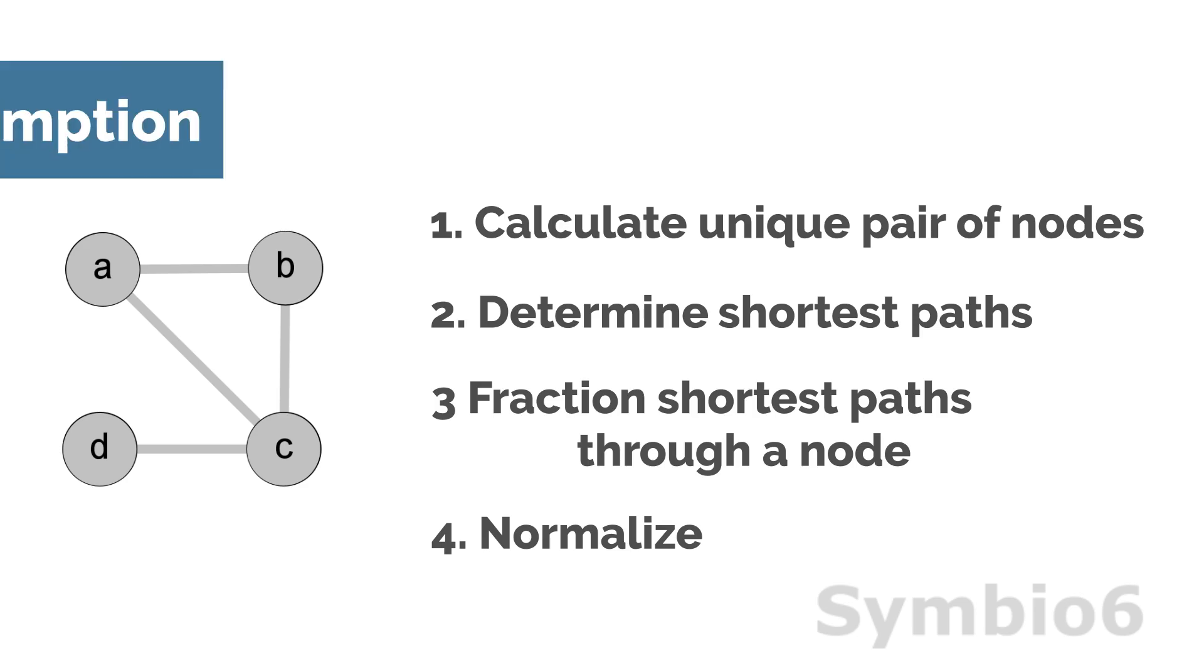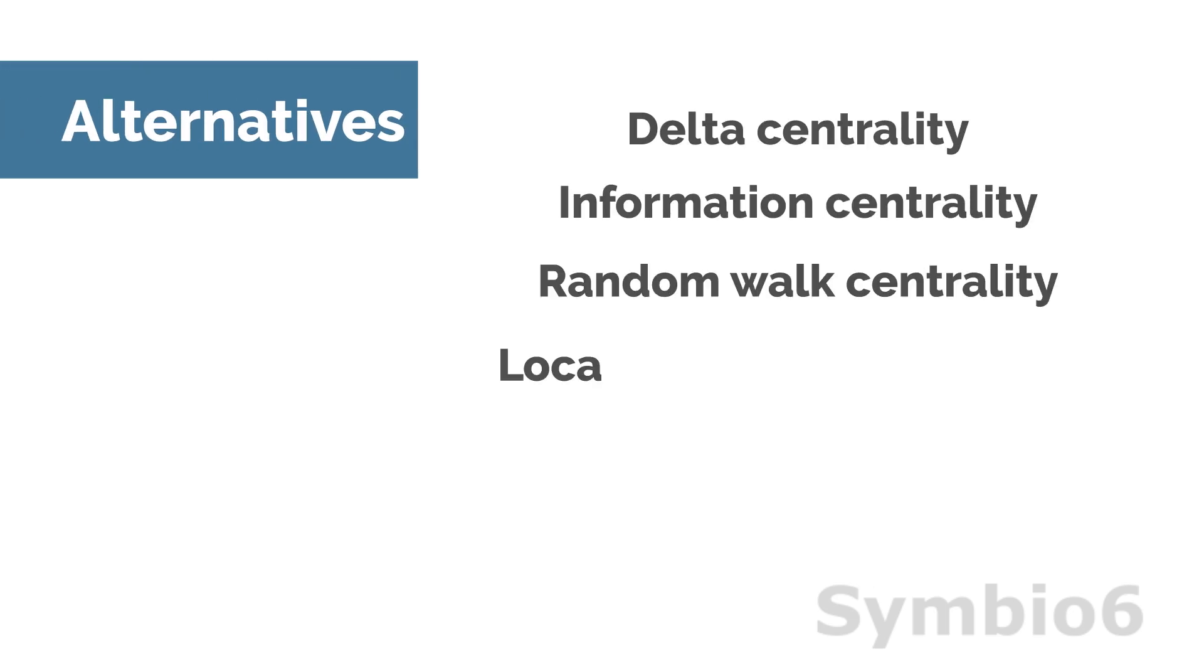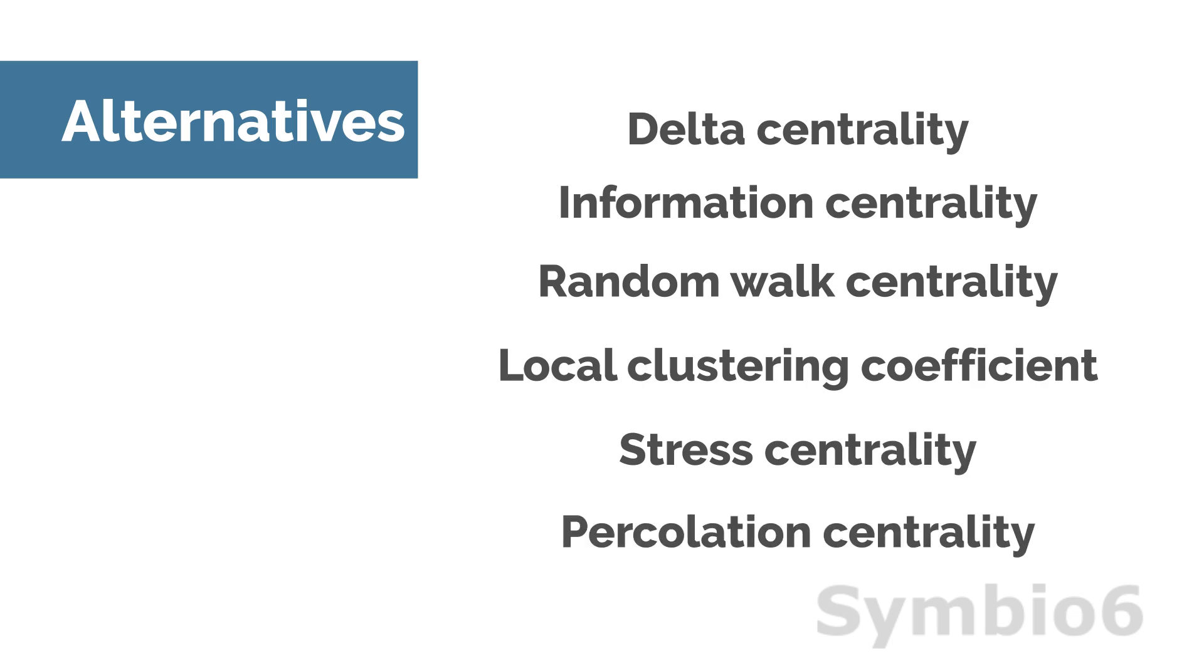An important thing to keep in mind is that betweenness centrality is based on the shortest path and ignores other paths between nodes. In real life this is more complicated, and the chosen path is not always the shortest. There are also variations on the betweenness centrality. Some relax the assumption by considering all possible paths.